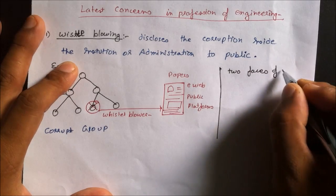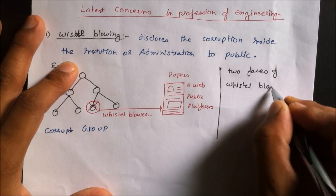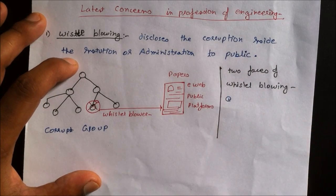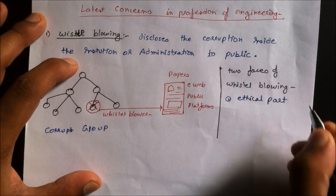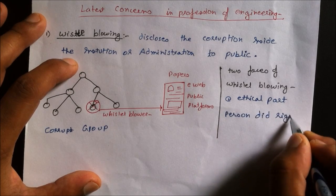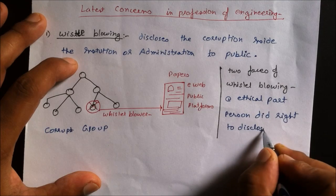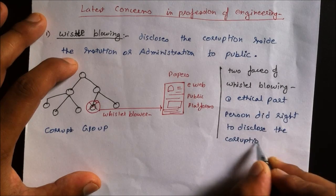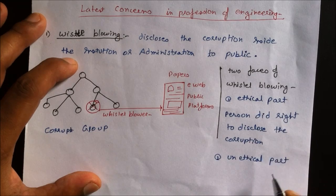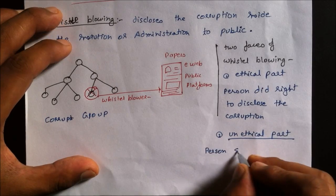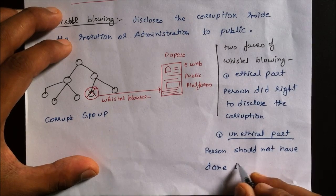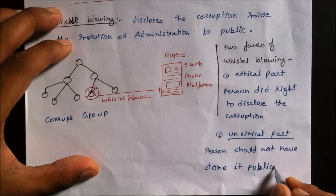Whistleblowing has two faces: the ethical part and the unethical part. The ethical part says that the person did the right thing by disclosing the corruption of the organization. But the unethical part shows that the person should not have done it publicly because it demolishes the image of the administration — the person should have reported it to higher authorities. Ultimately, whistleblowing is all about trust in the media and e-media.